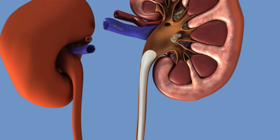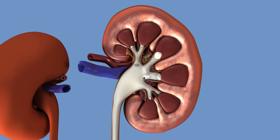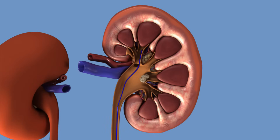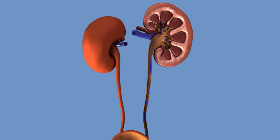A contrast agent or dye is administered through the tube into the ureters. X-ray images clearly outline the urinary channel and the exact position of the stone. A so-called safety wire, which helps guide the ureteroscope through the ureter, is then inserted.